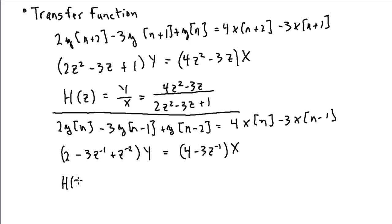And so, again, I get H of z is the ratio of y to x, or 4 minus 3z to the minus 1 over 2 minus 3z to the minus 1 plus z to the minus 2. It looks a little different from the expression above.